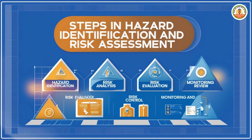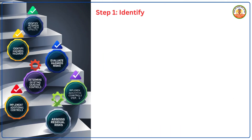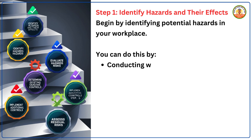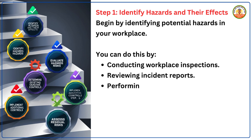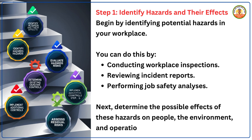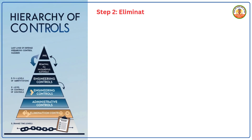Now let's break down the steps of conducting a HIRA. Step 1 — Identify hazards and their effects: begin by identifying potential hazards in your workplace by conducting workplace inspections, reviewing incident reports, and performing job safety analysis. Next, determine the possible effects of these hazards on people, the environment, and operations. Step 2 — Eliminate hazards: whenever feasible, remove the hazard entirely — for example, replace hazardous chemicals with safer alternatives.